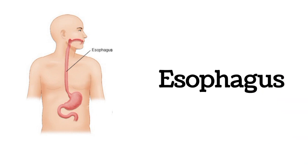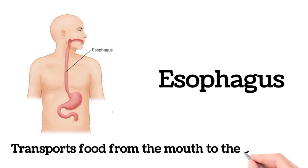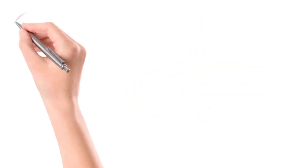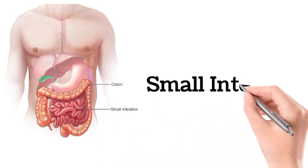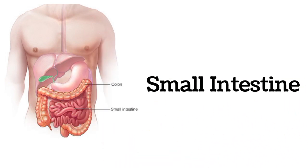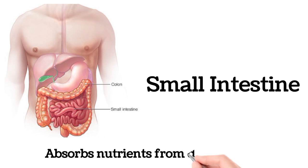Esophagus. The esophagus transports food from the mouth to the stomach. Small intestine. The small intestine absorbs nutrients from digested food.